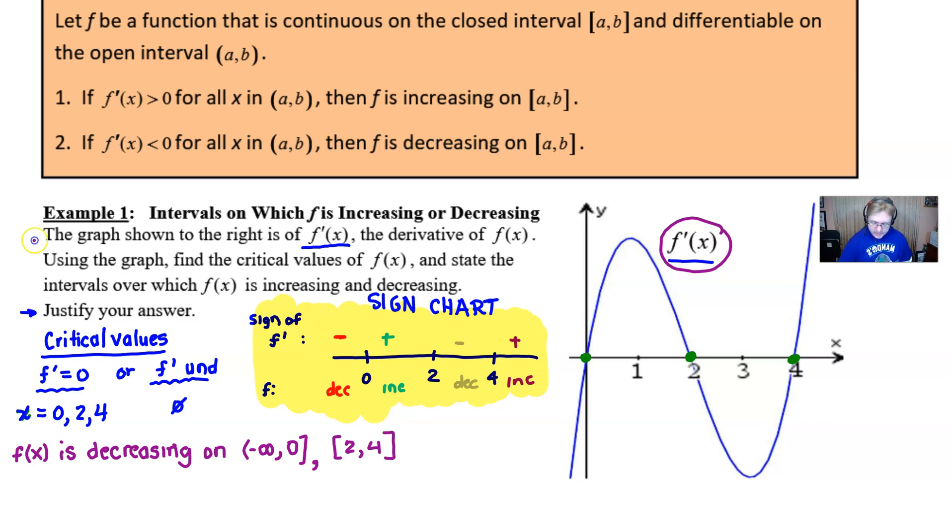And the next time that I have an interval that has a negative behavior for f is between 2 and 4. And note the usage of the brackets. Now I want to make sure I give a reason, and my reason would be because f'(x) is less than zero, and I can say on those intervals.